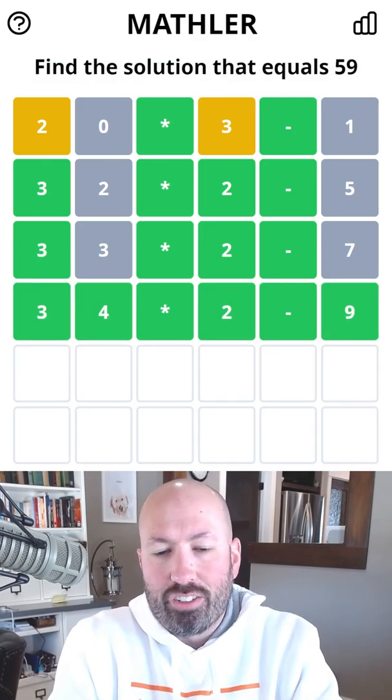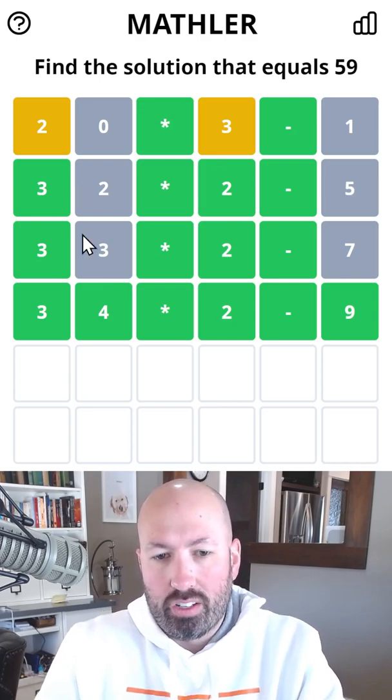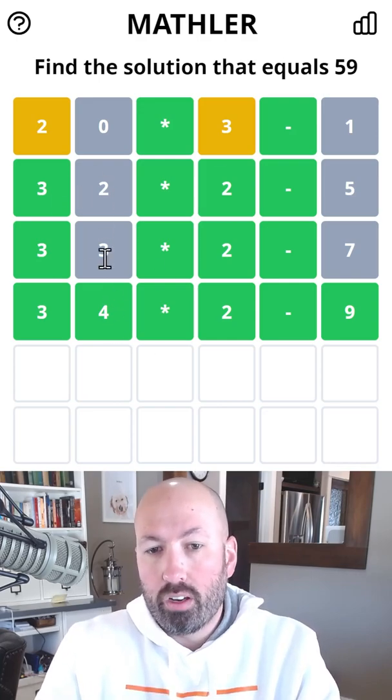There we go. All right, so we got a little unlucky by trying the 2 first, then the 3, and then it was the 4. It had to be one of those three.